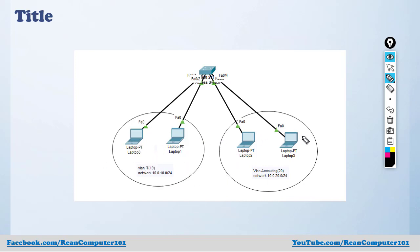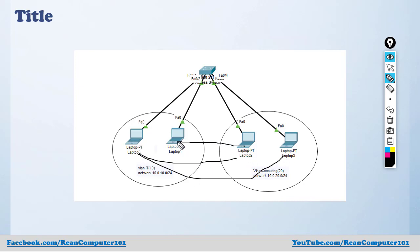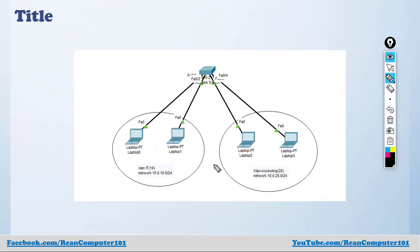Today I'm going to do inter-VLAN routing, meaning that everyone in each VLAN can communicate with each other. PC zero and laptop zero can communicate with each other, laptop one and laptop three can also communicate with laptop zero and laptop one. So each VLAN can communicate with another VLAN.